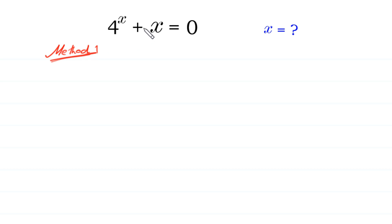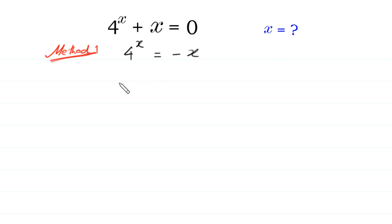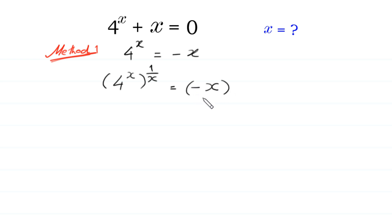First of all, we move this plus x to the right side. So 4 to the power x is equal to negative x. Next, we take the power 1 over x of both sides: 4 to the power x, whole to the power 1 over x, is equal to negative x to the power 1 over x.